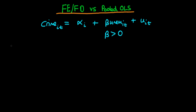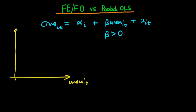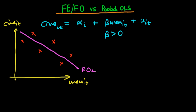So how does pooled OLS think about this situation? Well, what pooled OLS does is lump all observations together and estimate the model as if it's one big pooled cross section. So we might have observations for three cities at two different points in time — six observations in total — and pooled OLS fits a single line of best fit through all of them.